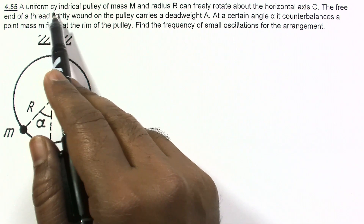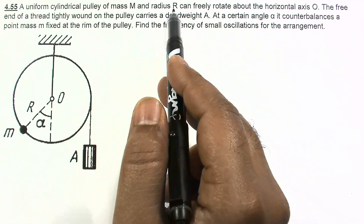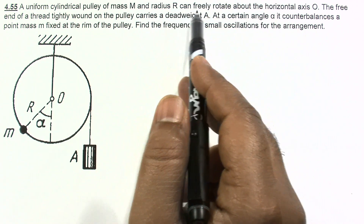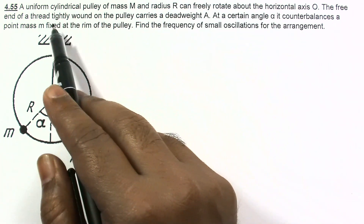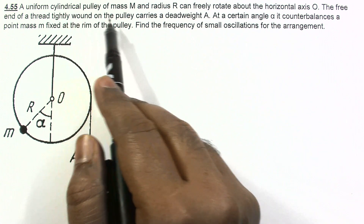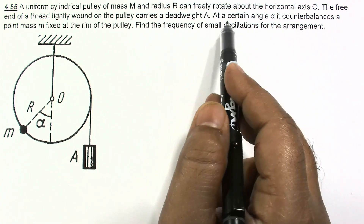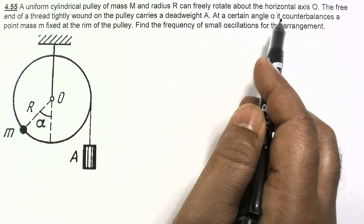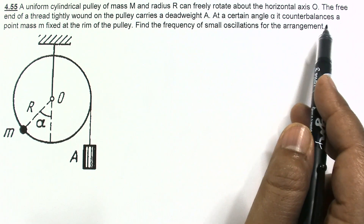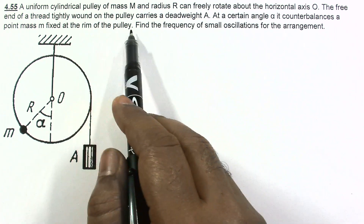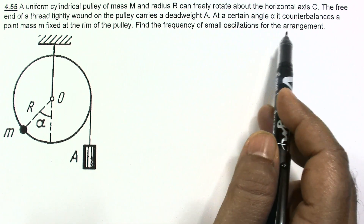In this question, a uniform cylindrical pulley of mass M and radius R can freely rotate about the horizontal axis O. The free end of a thread tightly wound on the pulley carries a dead weight A. At a certain angle alpha, it counterbalances a point mass M fixed at the rim of the pulley. Find the frequency of small oscillations for the arrangement.